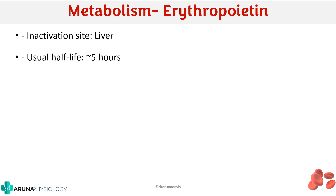Regarding the metabolism of erythropoietin: once synthesized, its usual half-life is around 5 hours, meaning the whole erythropoietin might be metabolized from the body in around 10 hours. The site of inactivation of erythropoietin is the liver. So it is produced from the kidney, goes into the circulation, stimulates all the precursor cells in the bone marrow, and then finally reaches the liver where it is metabolized. That is the cycle of erythropoietin.